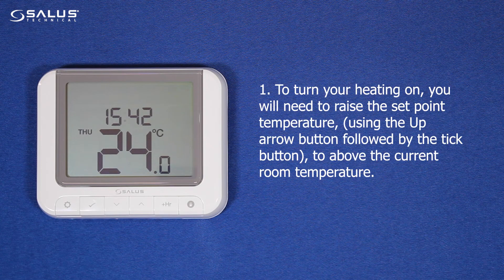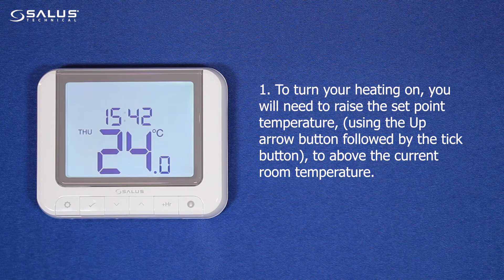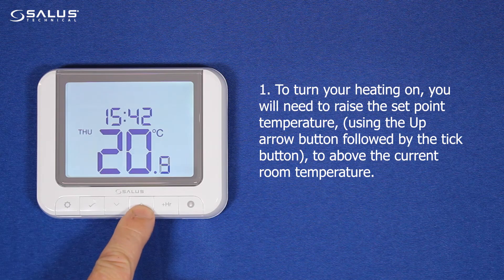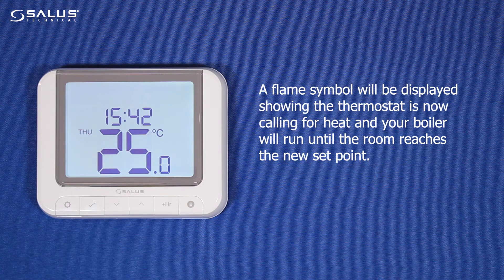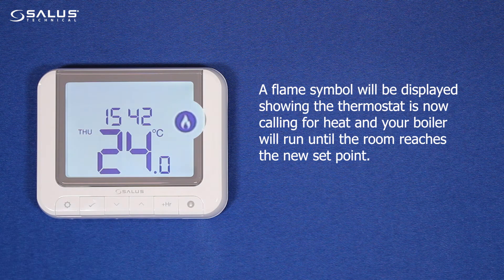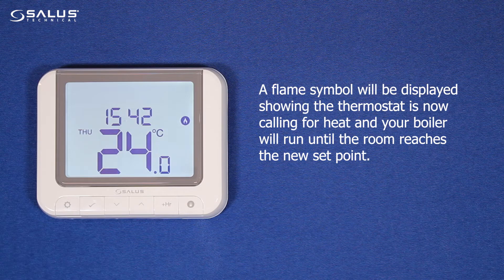1. To turn your heating on, you will need to raise the set point temperature using the up arrow button followed by the tick button, to above the current room temperature. A flame symbol will be displayed, showing the thermostat is now calling for heat, and your boiler will run until the room reaches the new set point.